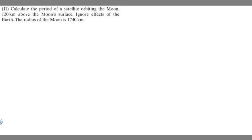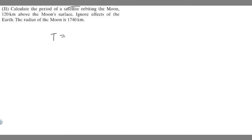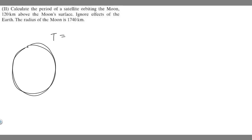What we're trying to find here is the period, and I'm going to denote that by T because it's essentially a time. The period is the total time it takes for our satellite to take one lap around the moon — to rotate around the moon one time. So that's what we're solving for.